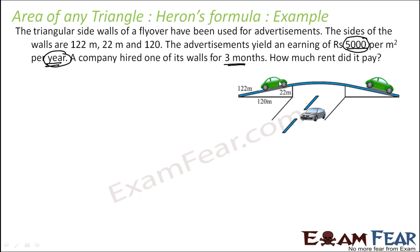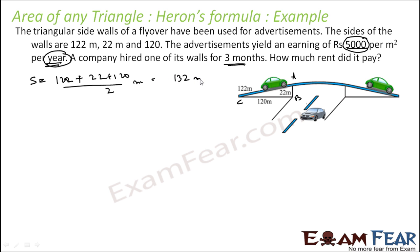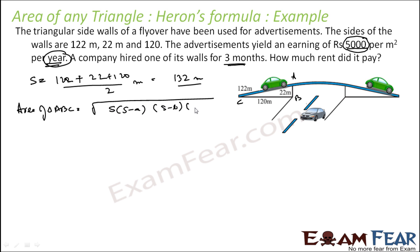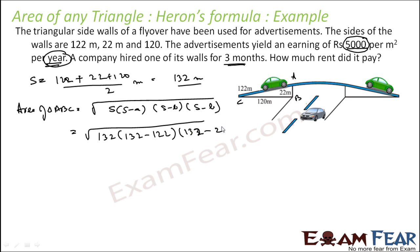First, we need to find the area of this triangle. Let this triangle be ABC. The semi-perimeter is (122 + 22 + 120) / 2 = 132 meters. The area of triangle ABC by Heron's formula is root of s(s−a)(s−b)(s−c), which becomes root of 132 × (132−122) × (132−22) × (132−120).